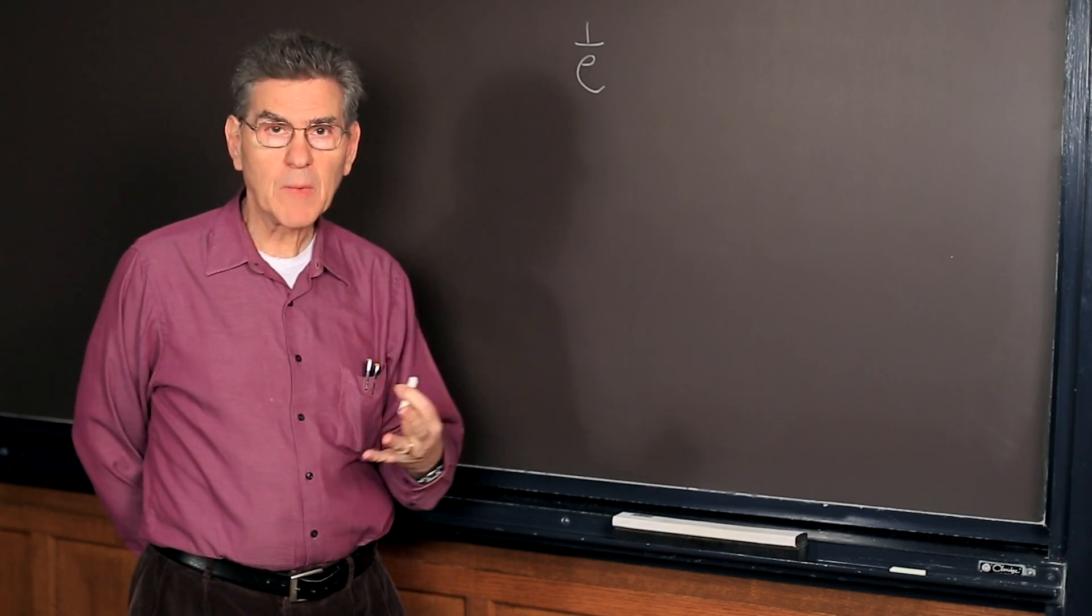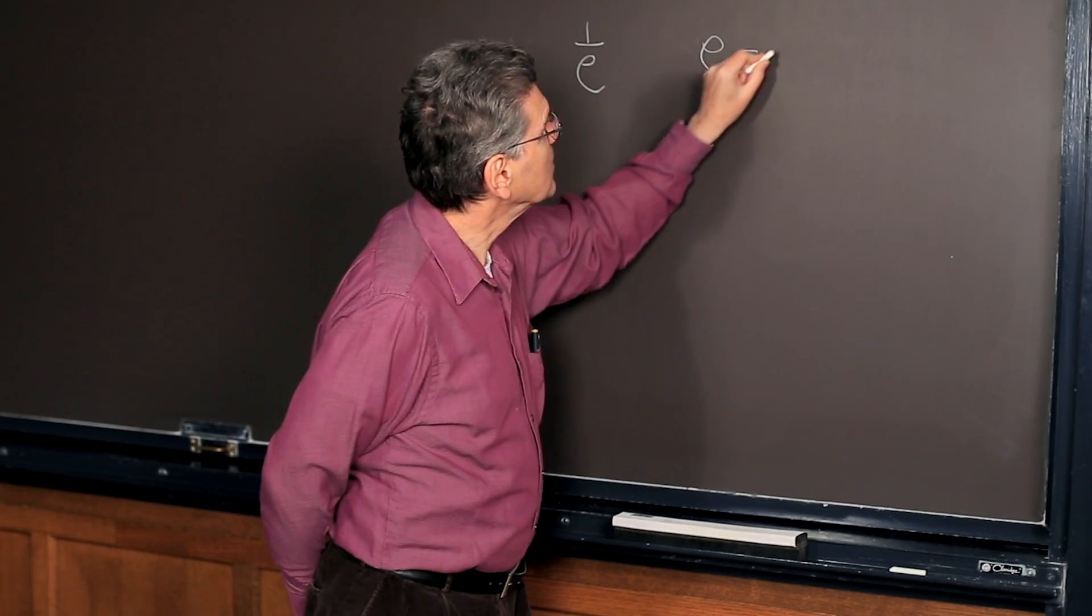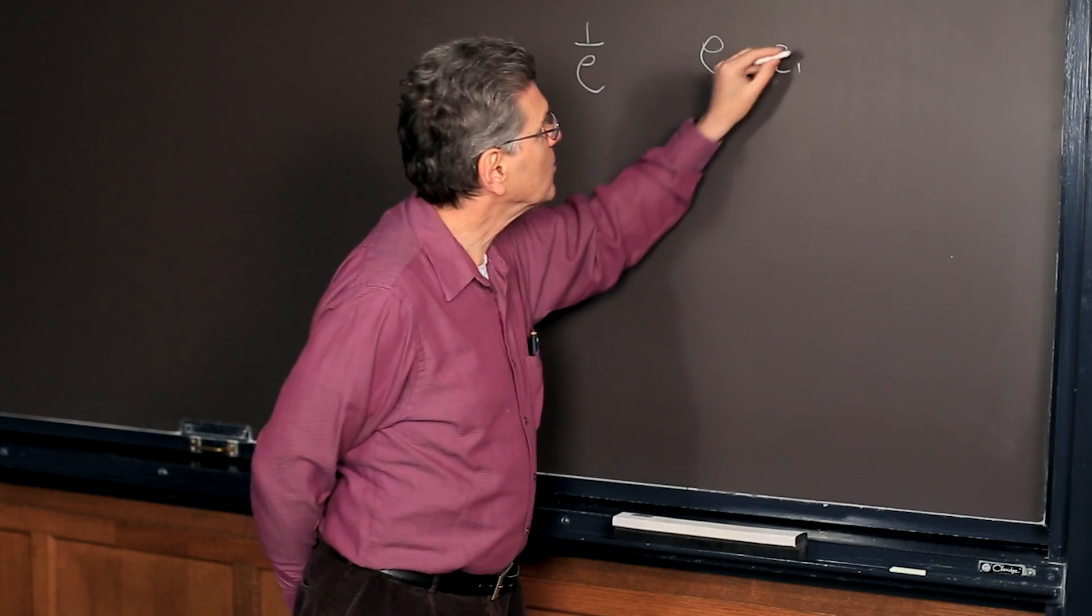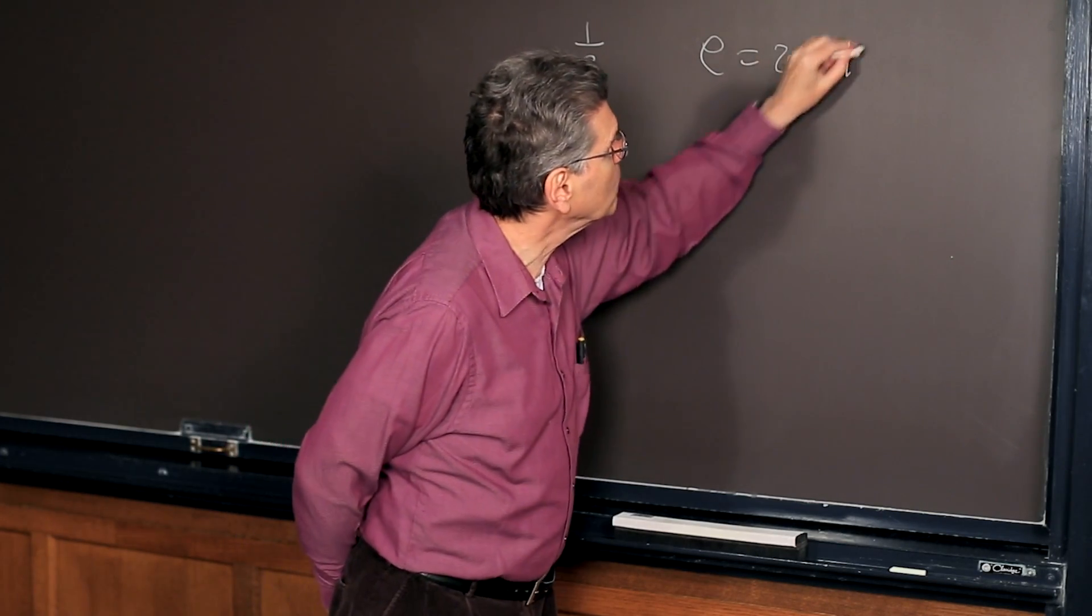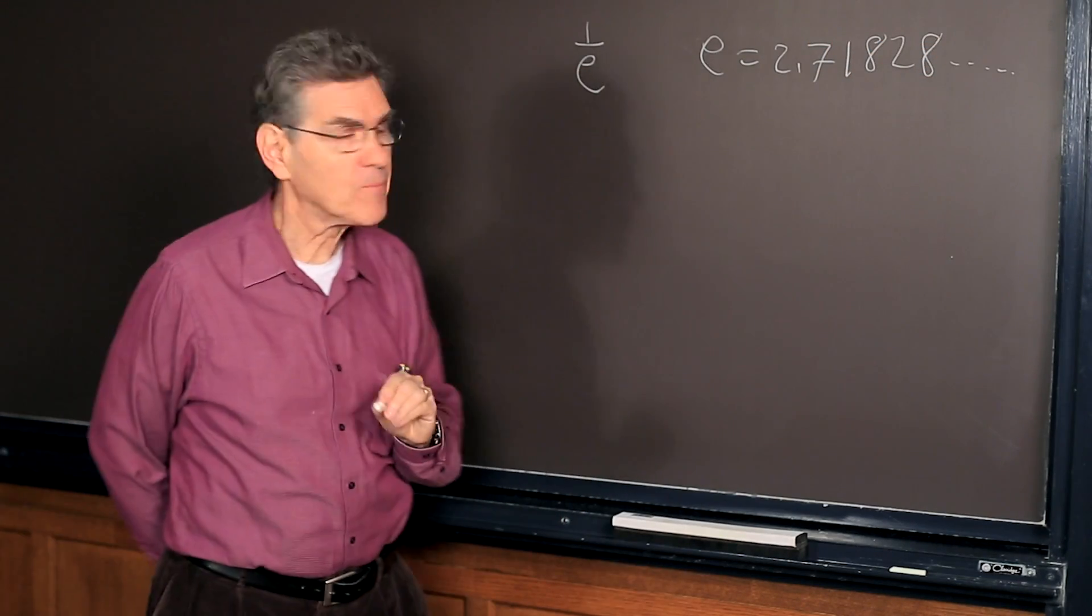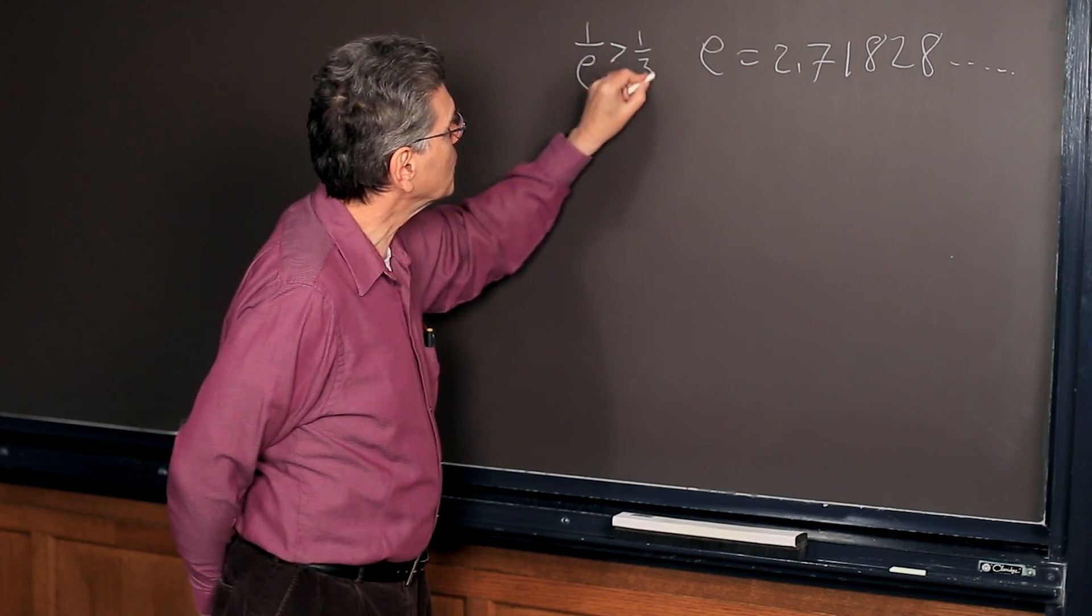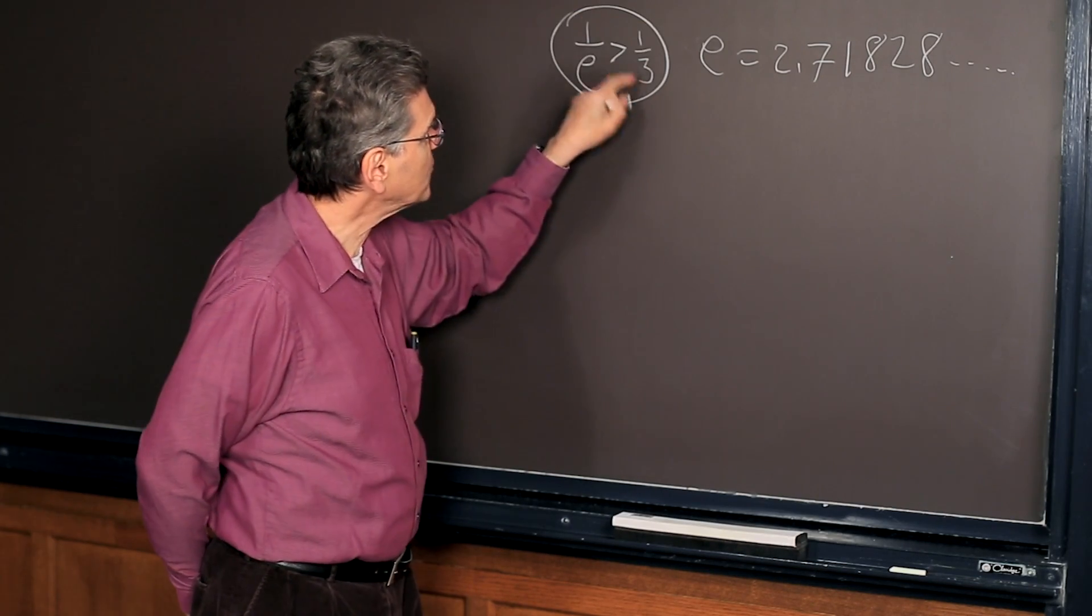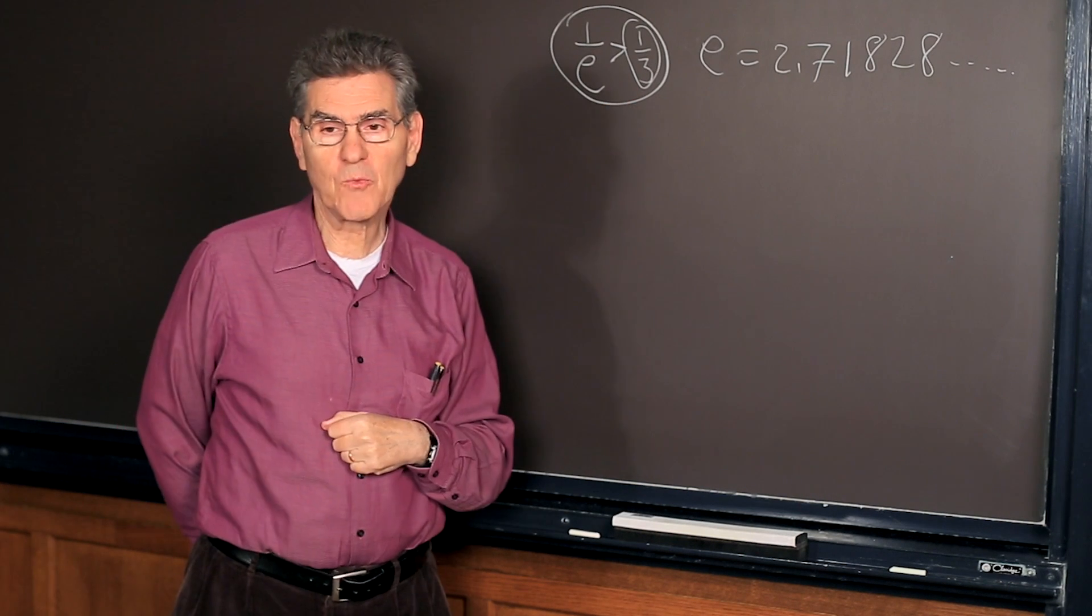E is a fundamental number in mathematics. E is about 2.7. In fact, E is 2.7, 1, 8, 2, 8, and so on. So 1 over E is bigger than 1 third. So your chances, the probability that you'll actually win this game, are better than 1 in 3.